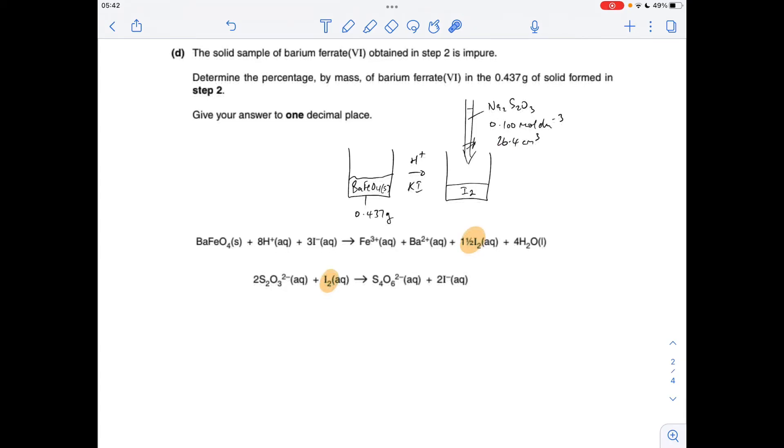The first thing I'm going to do is work out the moles of thiosulfate used in the titration. It's just concentration times volume in dm³. That comes out at 2.64×10⁻³. We're now going to half it to calculate the moles of iodine that were produced by that reaction. That's why I've highlighted them both in the same colour. That's 1.32×10⁻³.